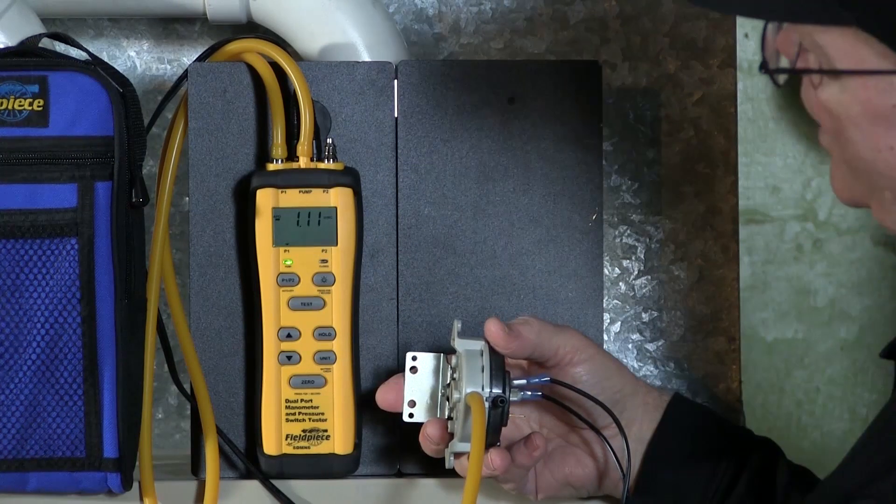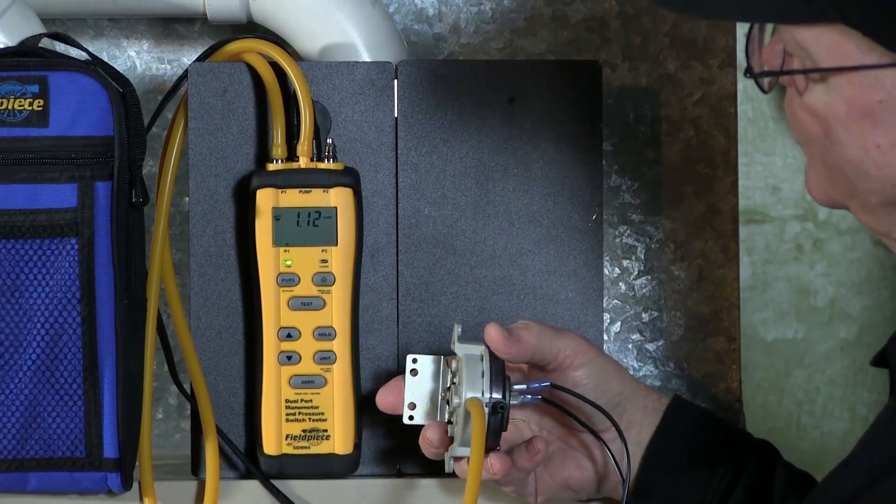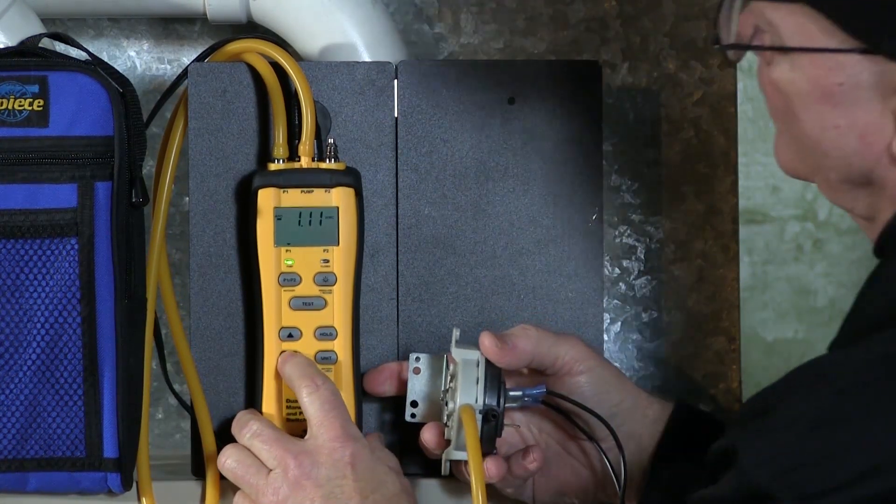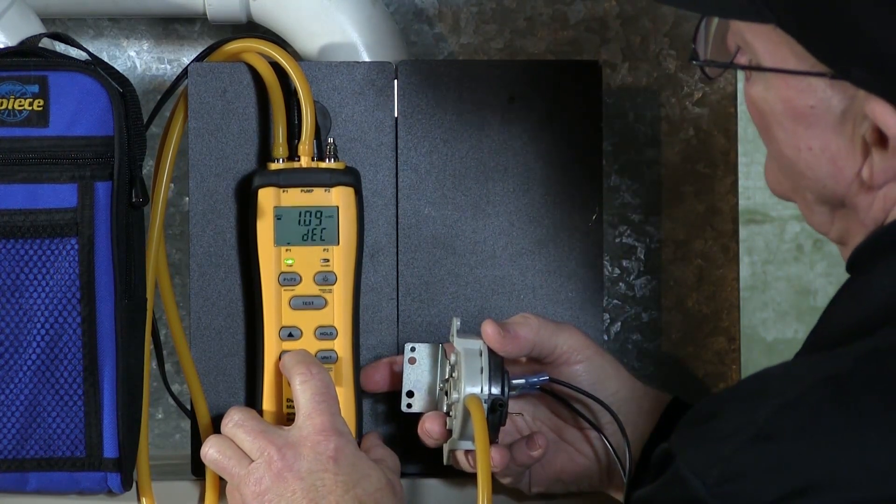And then we are going to adjust the pressure to whatever setting we wanted it to be at. So let's just go ahead and take it down to, say, 0.50. So let's take this pressure down to 0.50.